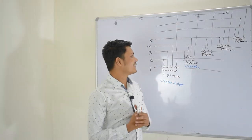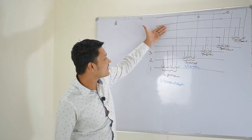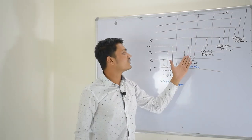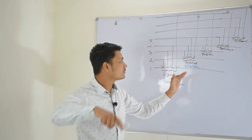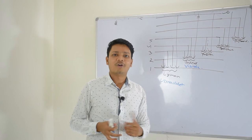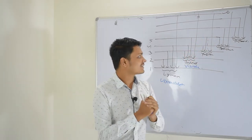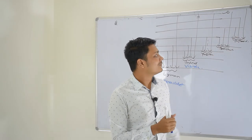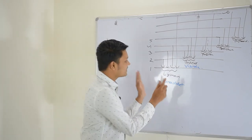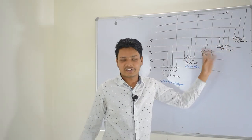Let's discuss the different series in the hydrogen spectrum. The Lyman series: electrons jump from higher excited states to the ground state — 2 to 1, 3 to 1, 4 to 1, and so on. The Balmer series: electrons jump from higher excited states to the second state — 3 to 2, 4 to 2, 5 to 2, and so on. The Paschen series: 4 to 3, 5 to 3, like this. The Brackett series: 5 to 4, 6 to 4, like this. The Pfund series: 6 to 5, 7 to 5, like this. Lyman is in the ultraviolet region. Balmer is in the visible range. Paschen, Brackett, and Pfund are all in the infrared range.